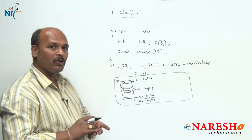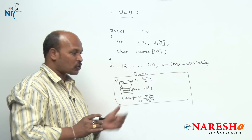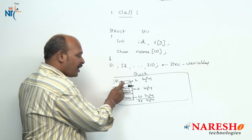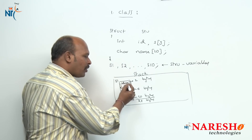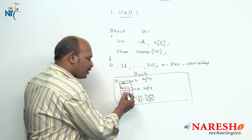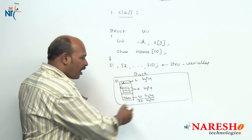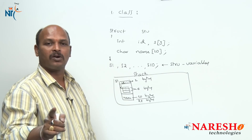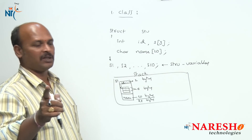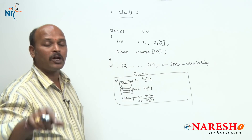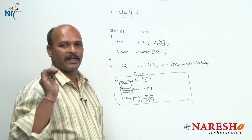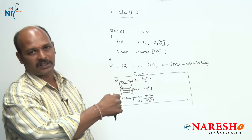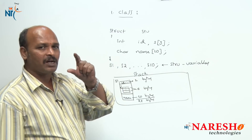Structure allows storing data this way. s1 structure data means we are able to store one student's data, one student's marks, one student's name — all related to one student. That one student is called one object. s2 allows storing a second student's data, s3, s4 like this. This is called object oriented. That is why structures are the foundation.